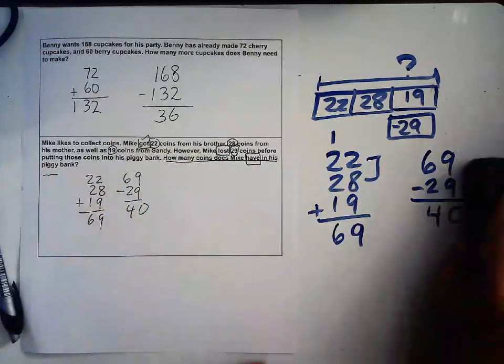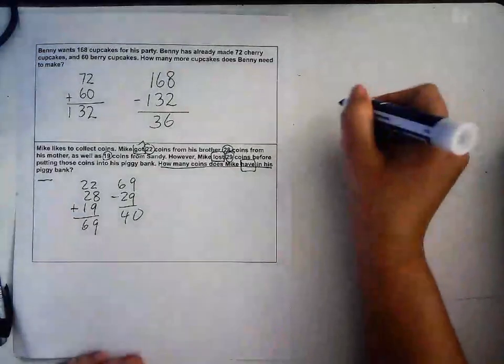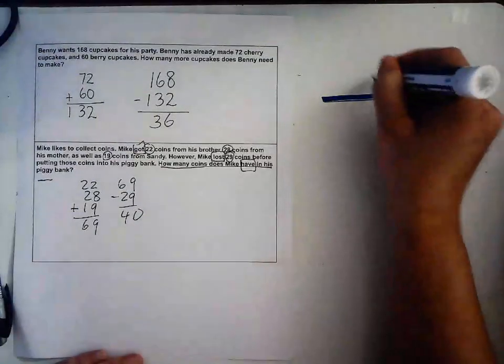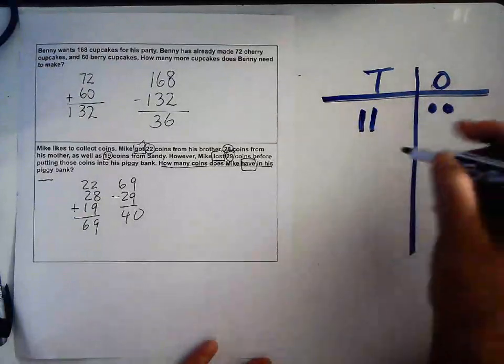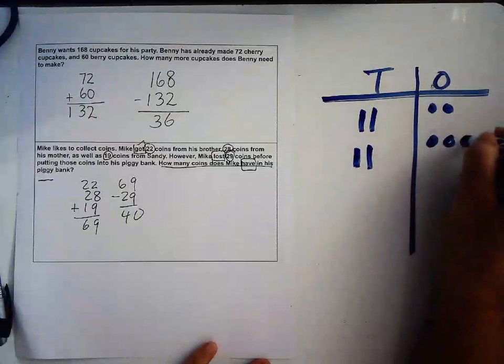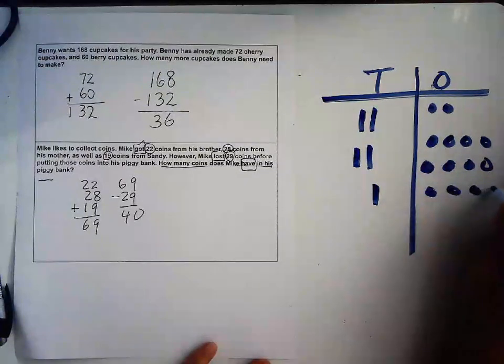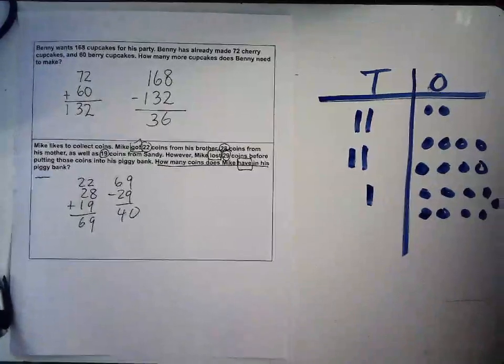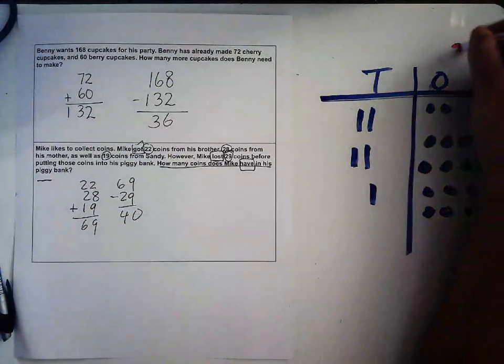I need the space here, so I'm going to erase this because I'm going to have to draw everything that Mike received. Here's my tens, my ones, and my tens. First I'm going to draw 22, then I'm going to draw 28 because that's what he received, then I'm going to draw 19: 1, 2, 3, 4, 5, 6, 7, 8, 9. So that's my three numbers.